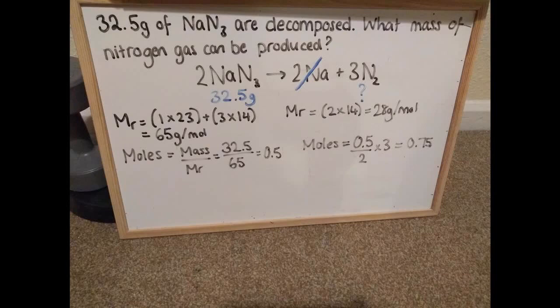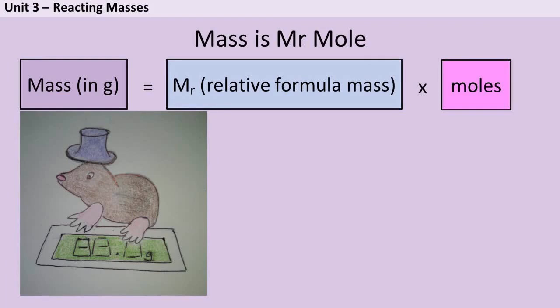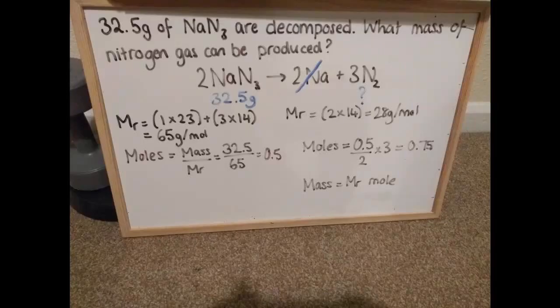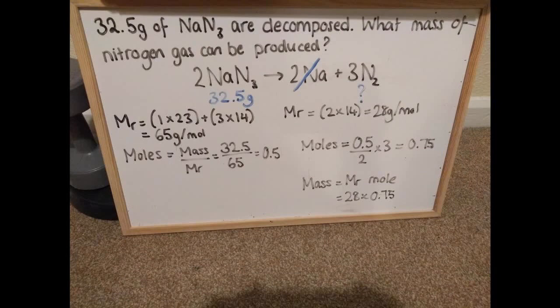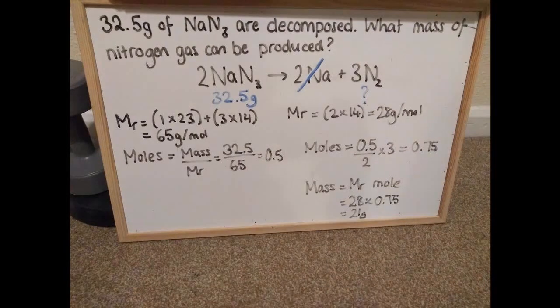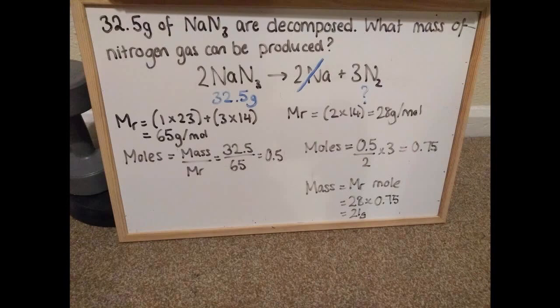So what this tells me is that my original 0.5 moles of sodium azide, which weighed 32.5 grams, is now going to make 0.75 moles of nitrogen. So at this point I've got most of the marks in the question. But to finish off I need to know what the mass of that nitrogen is. Well if we come back to our equation that mass is MR times mole, mass is MR times the number of moles. 0.75 is the number of moles, so what's the MR? Well I've already worked that out up here, it's 28. So 28 times by 0.75 gives me a final mass of 21. And then because it's a mass I obviously want to put some units after it and the units are grams. So 32.5 grams of sodium azide makes 21 grams of nitrogen gas.